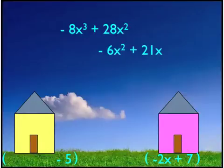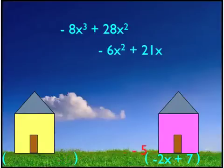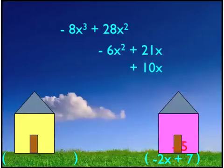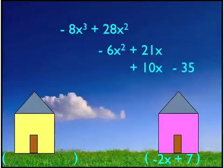Last, I need to distribute the negative 5. Take negative 5 and multiply it by negative 2x — a negative times a negative is a positive, so I have positive 10x. Then distribute the negative 5 to the 7: negative 5 times 7 is negative 35. And then it's done — all the terms in the first polynomial have multiplied all the terms in the second polynomial.